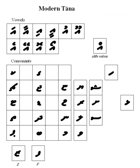Thana was added to the Unicode standard in September 1999 with the release of version 3.0. The Unicode block for Thana is U+0780 to U+07BF.